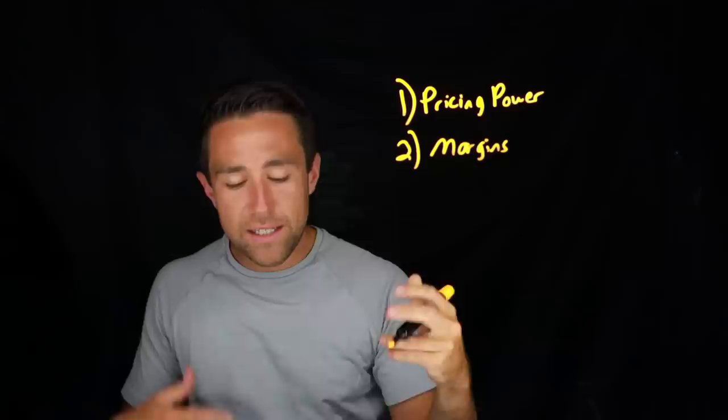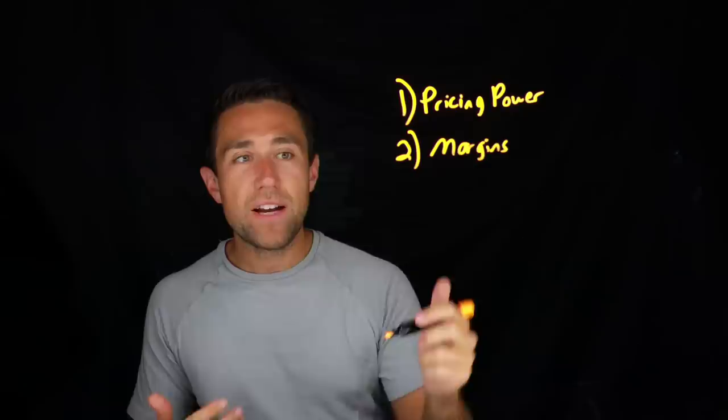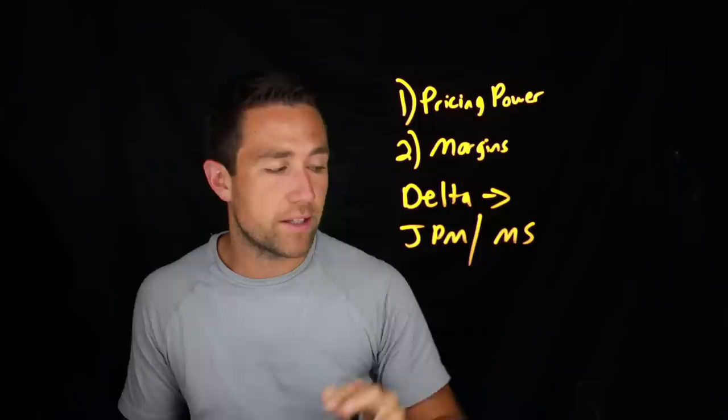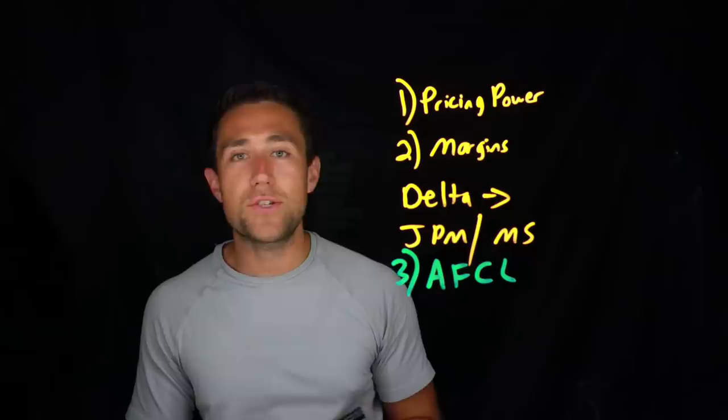And we've got some big earnings coming out this week from not only Delta. This is going to be the airlines, we'll talk about them in a sec. But we've got JPM and Morgan Stanley releasing earnings this week. Now this is really important because what I specifically want to look for here is number three, allowance for credit losses.